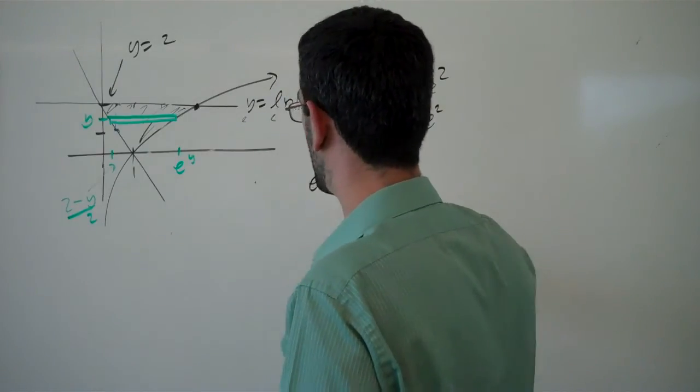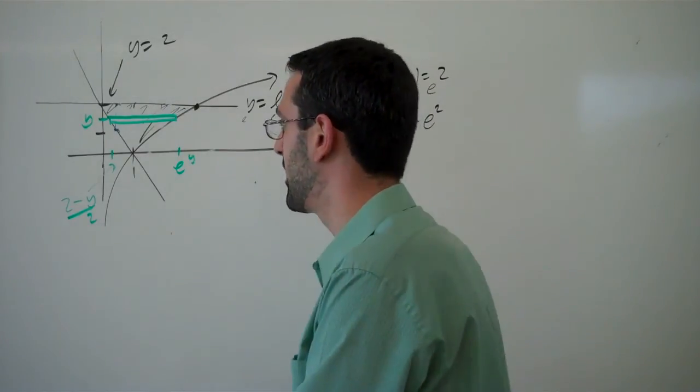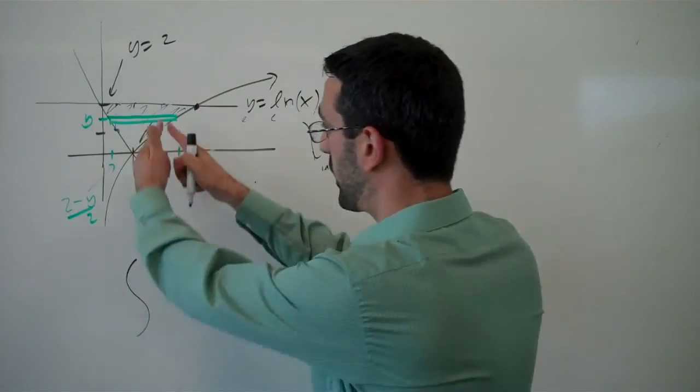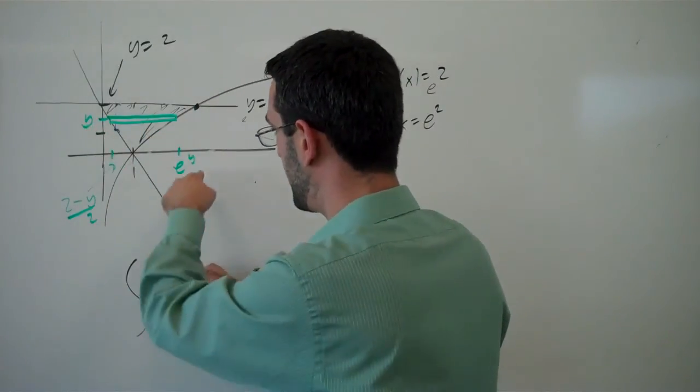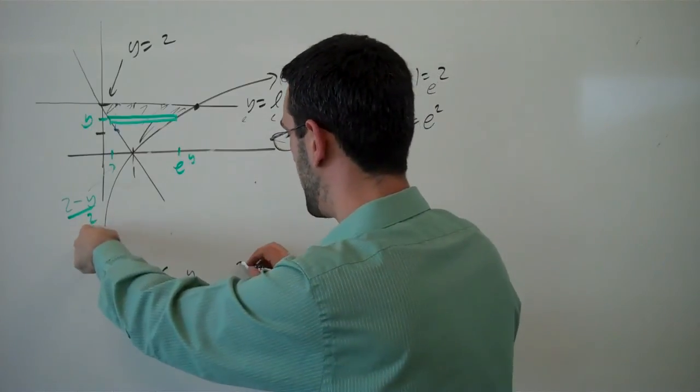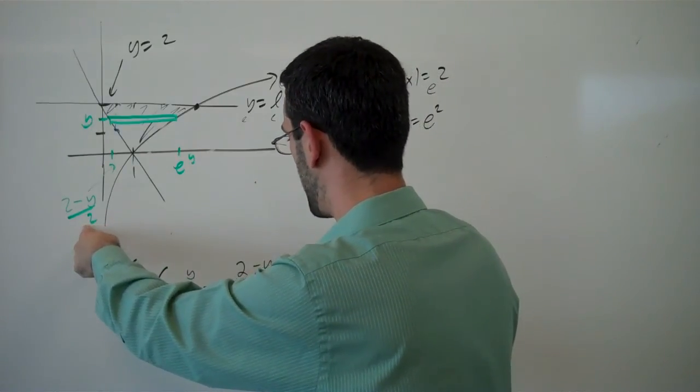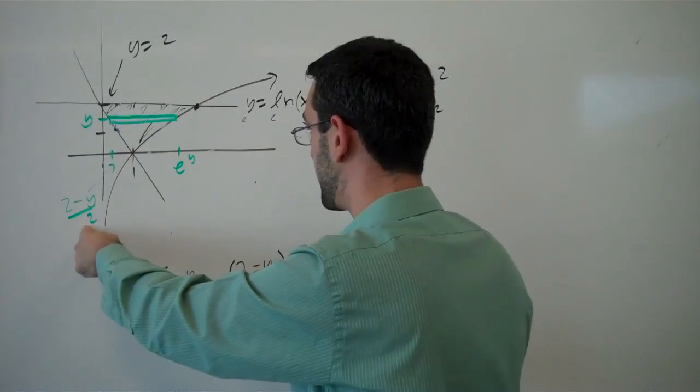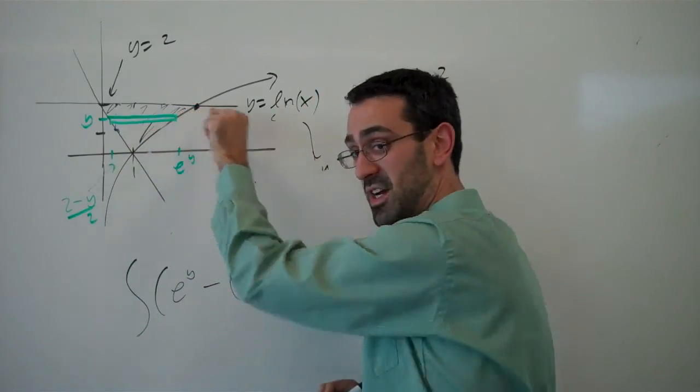And putting those together, then, the width of my slice would be e to the y as the larger x value minus 2 minus y over 2 as the smaller y value times some tiny little dy.